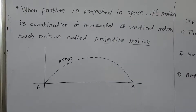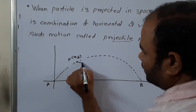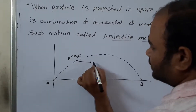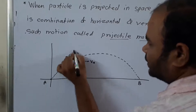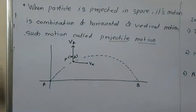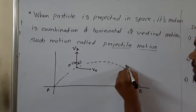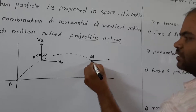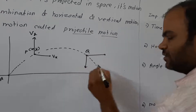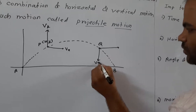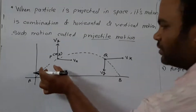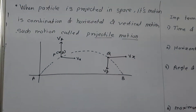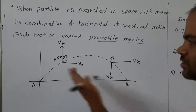At point P we can find the velocity; that point has two velocity components — one in the horizontal direction and one in the vertical direction (upward). Similarly, at another point Q, we again have two velocities: one in the vertical direction (downward) and one in the horizontal direction, denoted Vy and Vx. At any point on this curved path we get two velocities — one horizontal and one vertical — which is why we call this motion projectile motion.